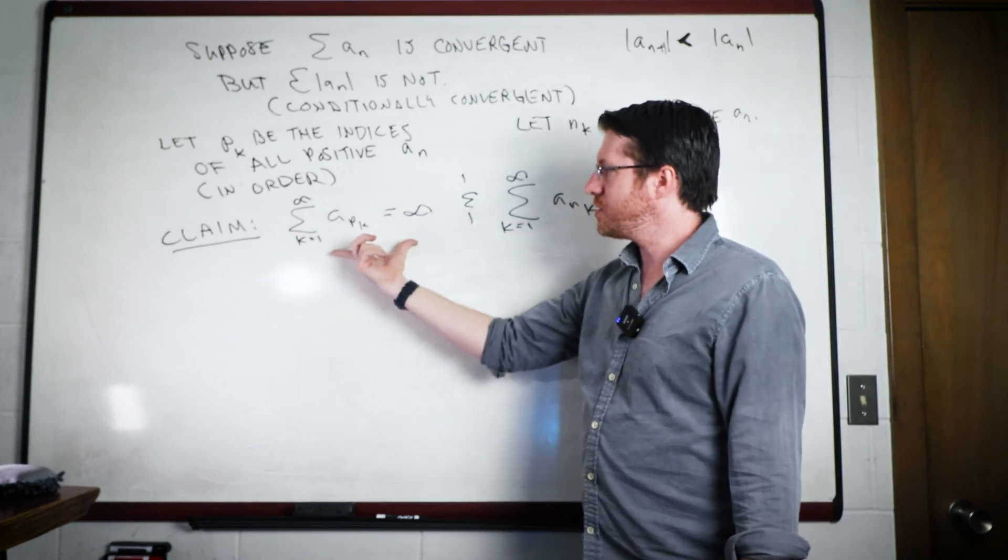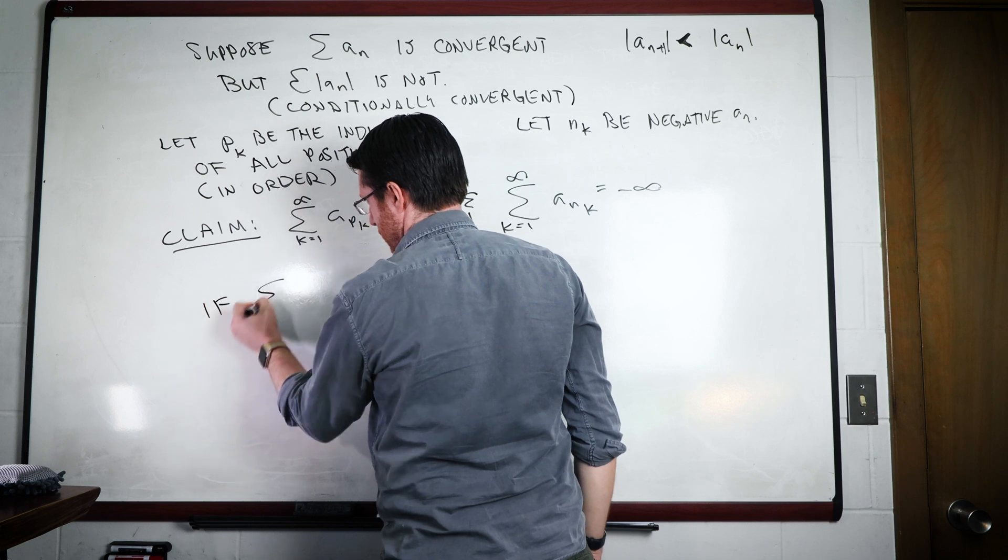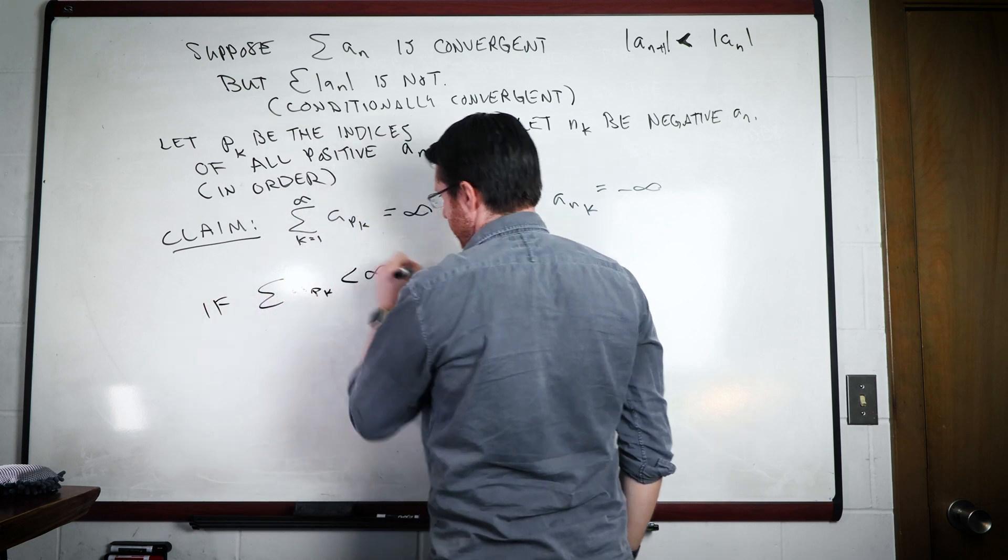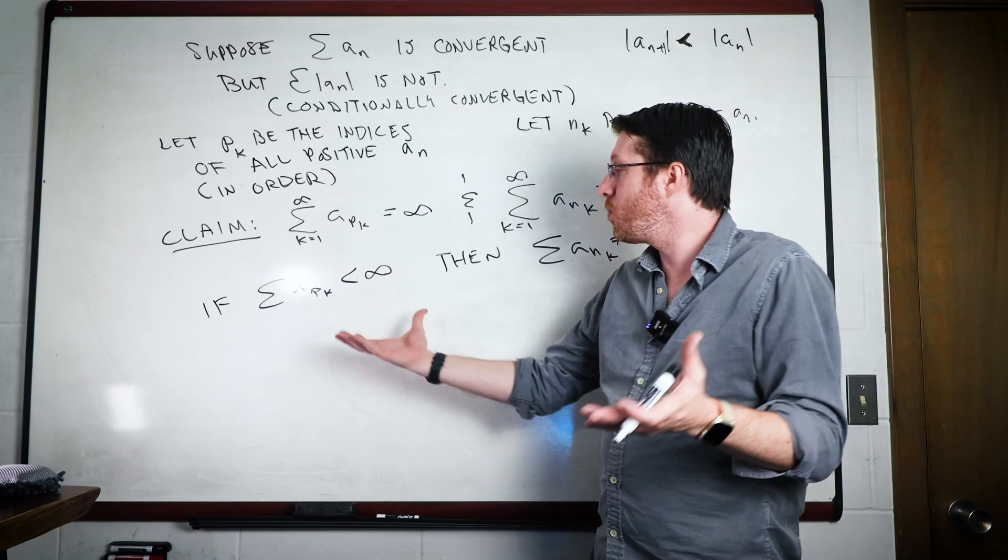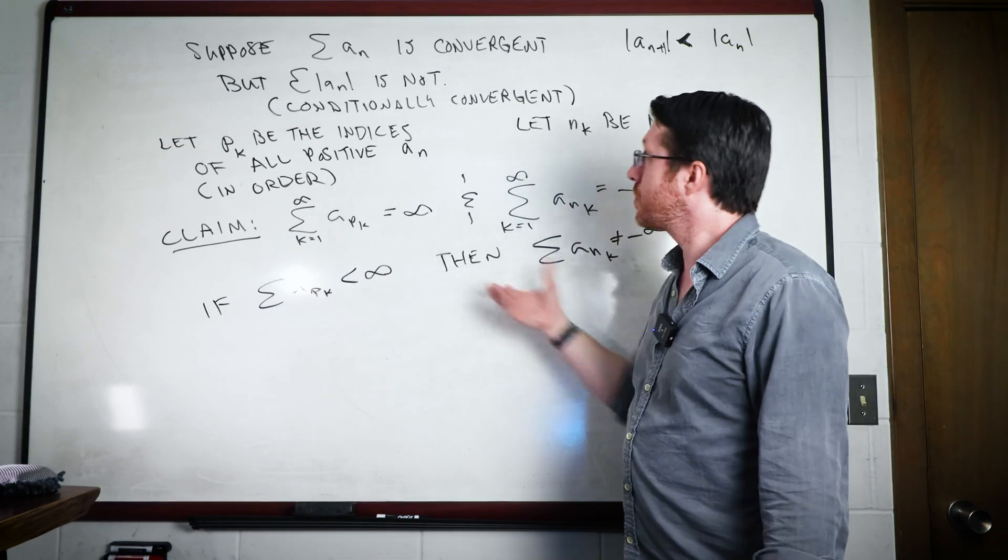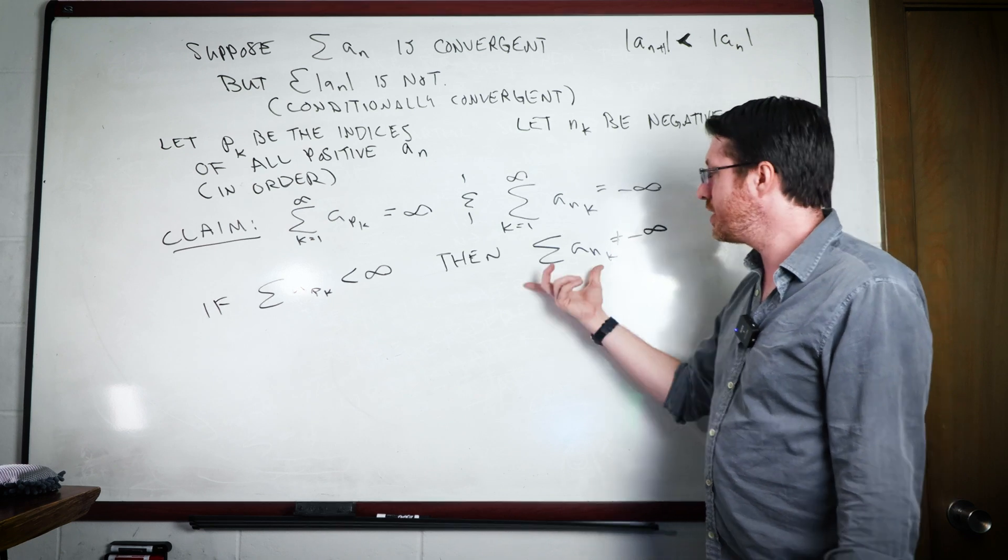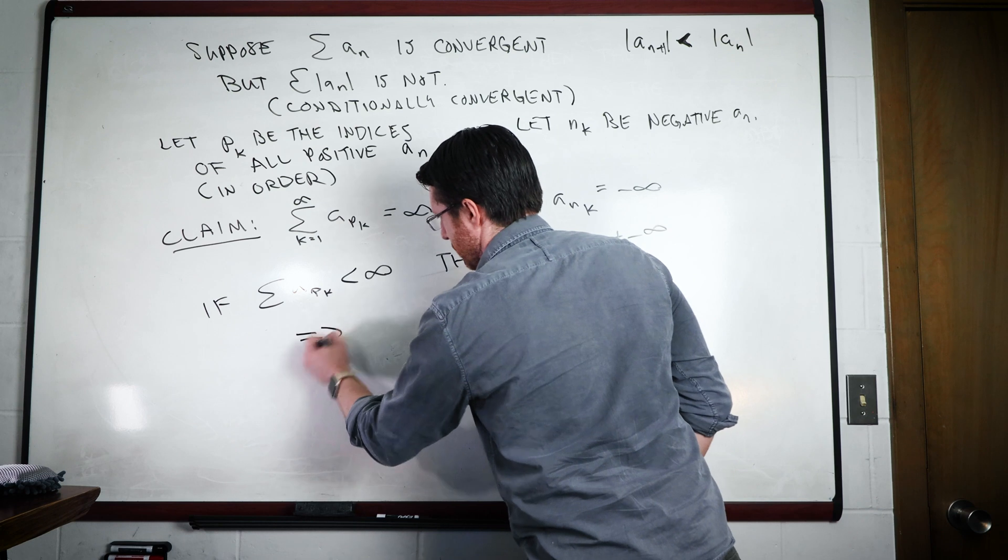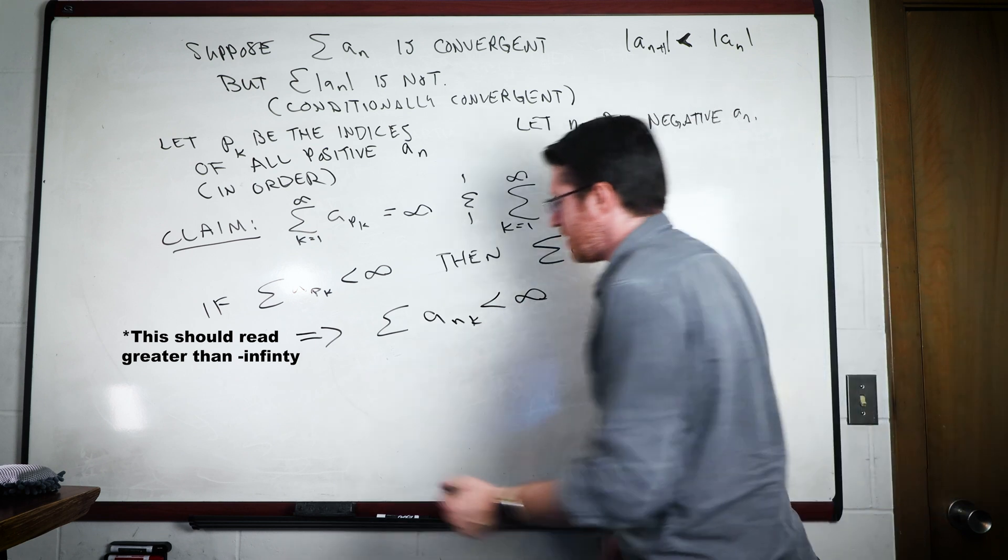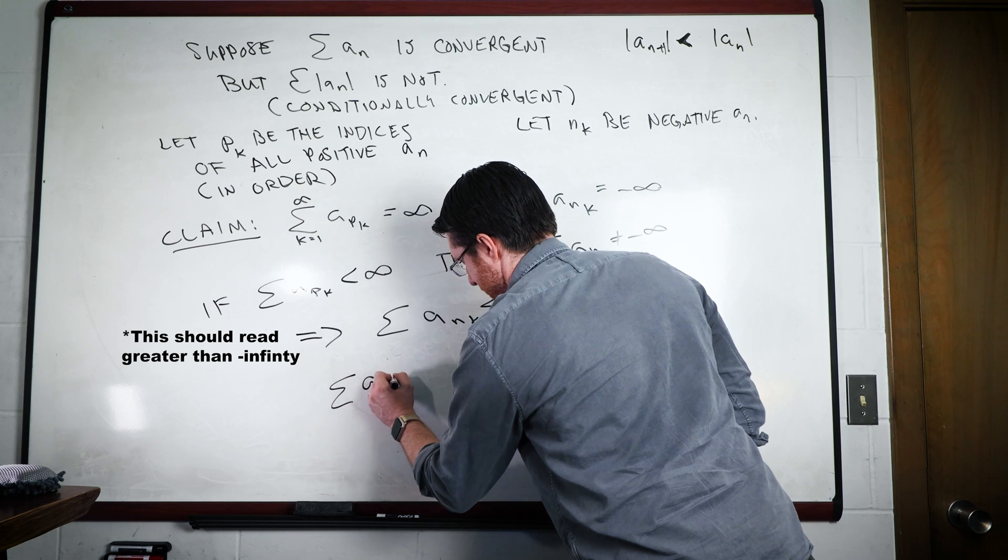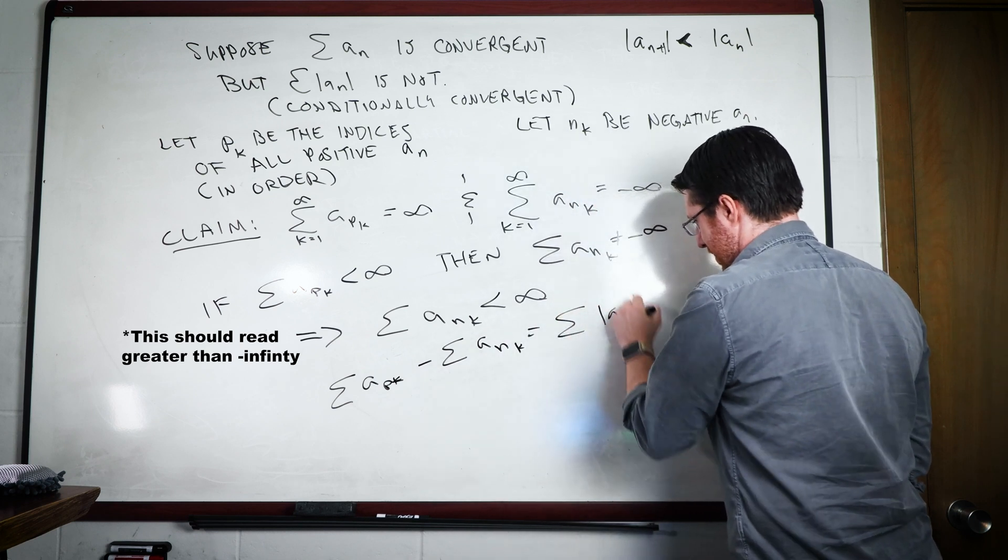Now our claim is that this sum is going to be infinity and this sum is going to be minus infinity. We know at the very least that this a_n term is actually convergent. So if the sum of a_p_k is less than infinity, then the sum of a_n_k can't be negative infinity. But if that was the case, then the sum of a_p_k minus the sum of a_n_k would be the sum of absolute value of a_n.